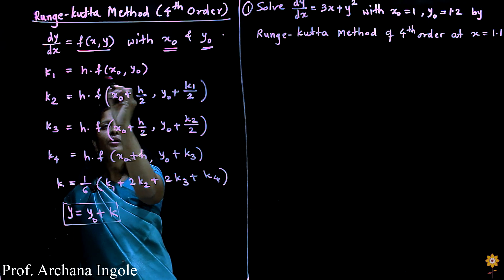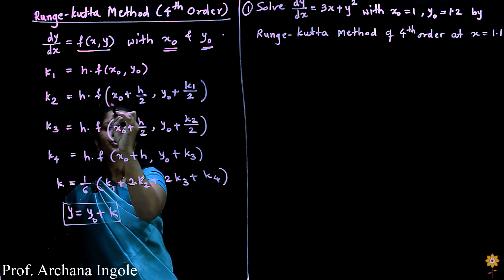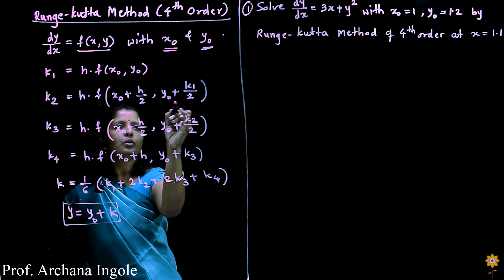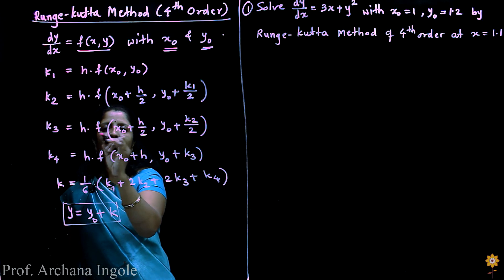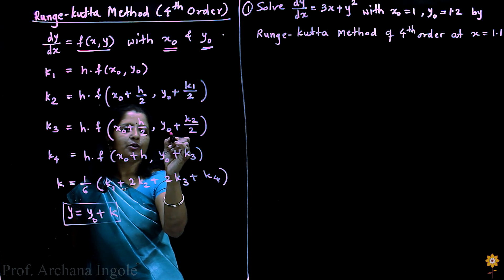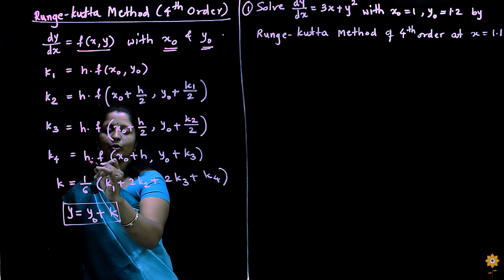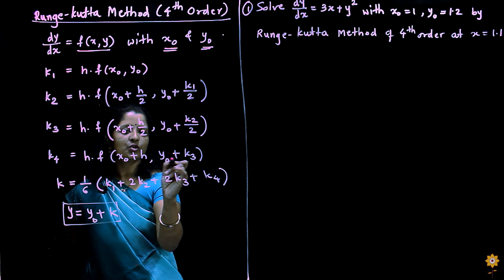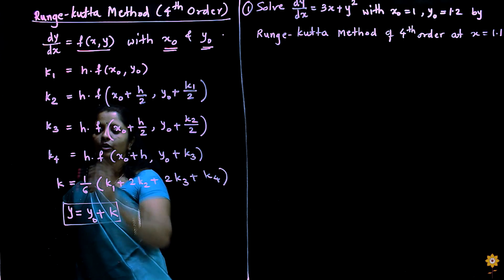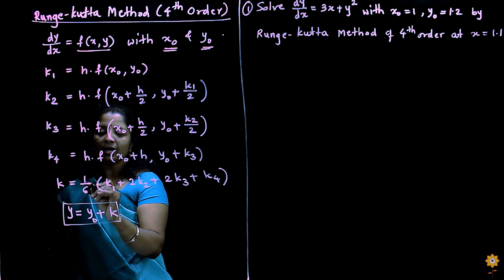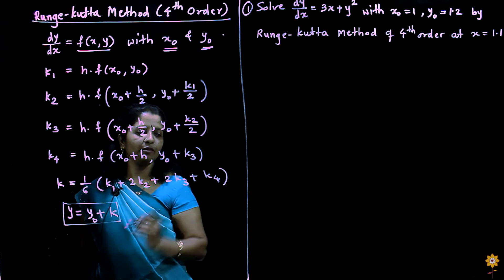k1 is equal to h into f of x0, y0. k2 is equal to h into f of x0 plus h by 2, y0 plus k1 by 2. k3 is equal to h into f of x0 plus h by 2, y0 plus k2 by 2. k4 is equal to h into f of x0 plus h, y0 plus k3. These four constants are used to find k as 1 by 6 times k1 plus 2k2 plus 2k3 plus k4.